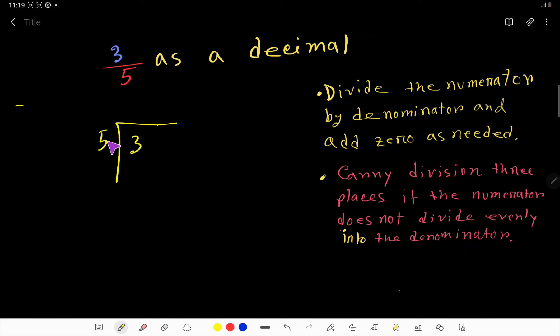This 3 is smaller than 5, so we have to rewrite 3 as 3.0 or 3.00. After the decimal point, you can take any number of zeros as needed.